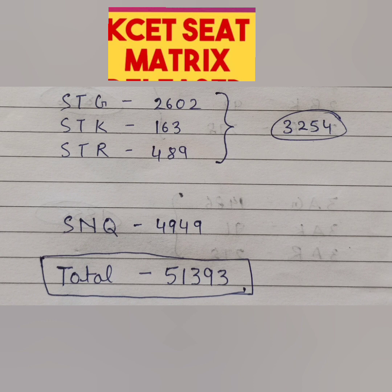Apart from that, over and above this, is SNQ — supernumerary quota — with about 5000 seats, specifically 4949. Everybody is eligible for this category based on income levels, not caste. If your income is less than 6 lakhs, you are eligible to get a seat in this. The computer always checks this category first, then checks the respective caste categories. In total, the seats available in KCET this year is 51,393 seats across all categories.